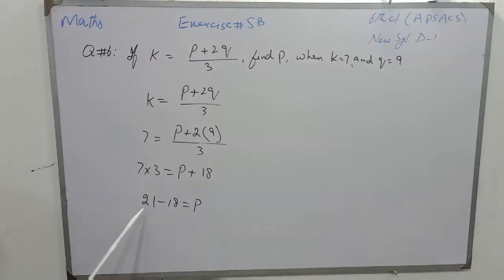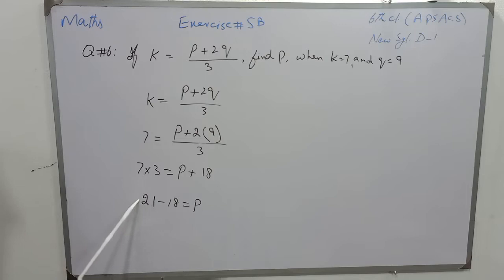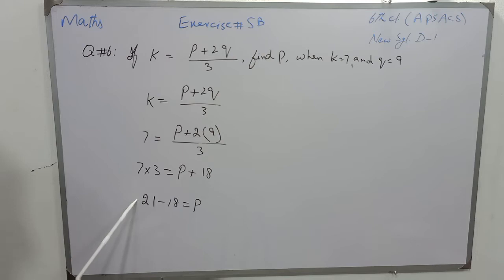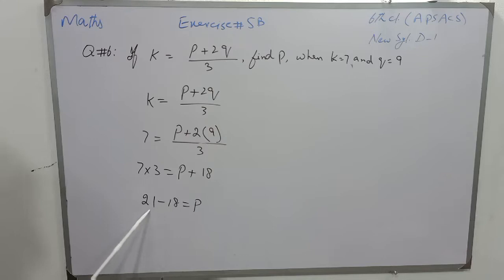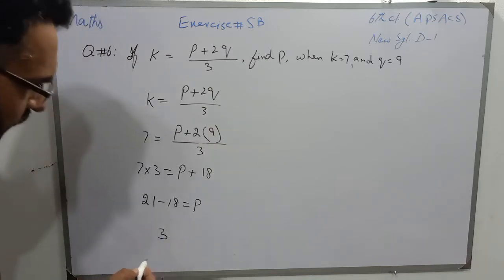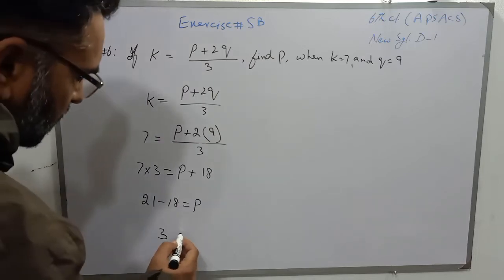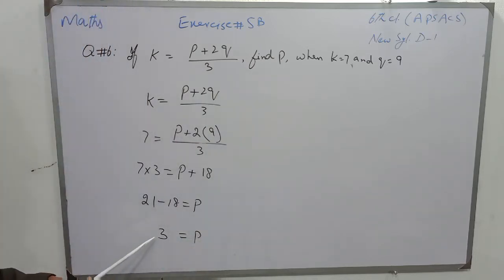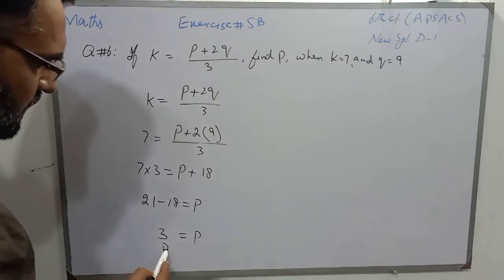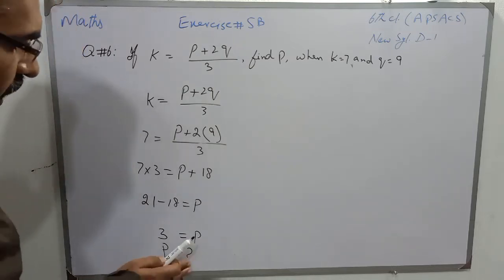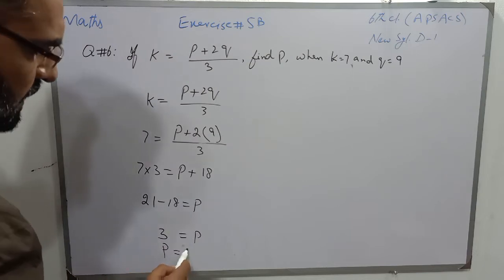On the left side there are two numbers — one is positive and the other is negative. When there are two numbers with different signs, we subtract the smaller from the greater and put the sign of the greater. So 18 is smaller and 21 is greater; we subtract 18 from 21 and get 3. Since 21 is positive, the answer is positive, so the value of p is 3.